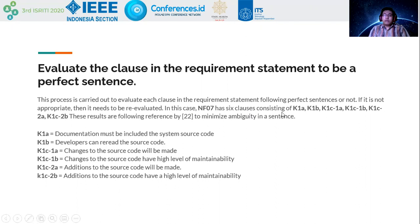The six clauses consist of KA1, KAB, KAC, KA1C, KA2A, and KA2a. These results follow a reference to minimize ambiguity in sentences, ensuring sentences are readable and well-partitioned.